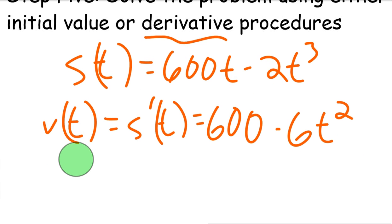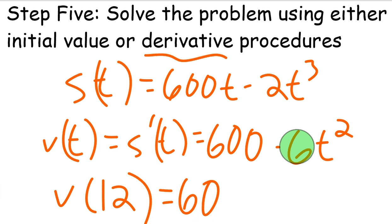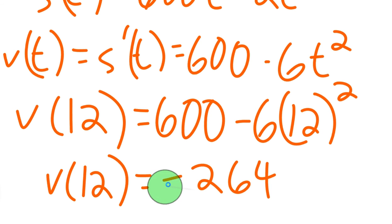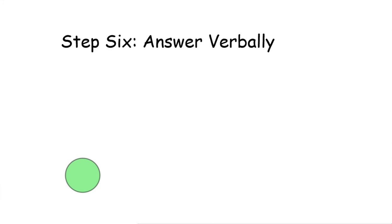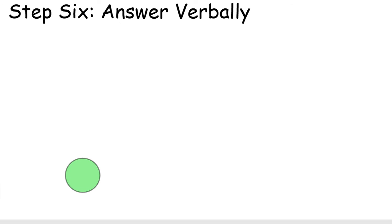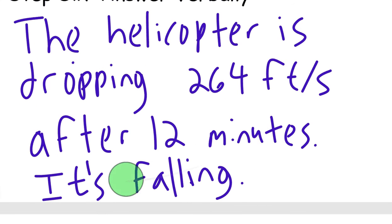You can start to see this is actually a pretty easy problem because now we can just plug in 12 into our velocity function. And that will give us how fast the helicopter is going at time t equals 12. So I went ahead and calculated that, and I got negative 264 for the velocity. So now that we've figured that out, let's go ahead and write this out verbally.